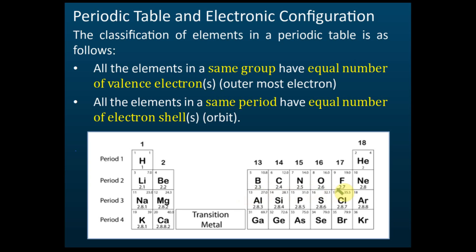The electronic configurations go: 2,1 — 2,2 — 2,3 — 2,4 — 2,5 — 2,6 — 2,7 — 2,8, and after 2,8 it becomes 2,8,1, coming back to Group 1 again, then 2,8,2 — 2,8,3.